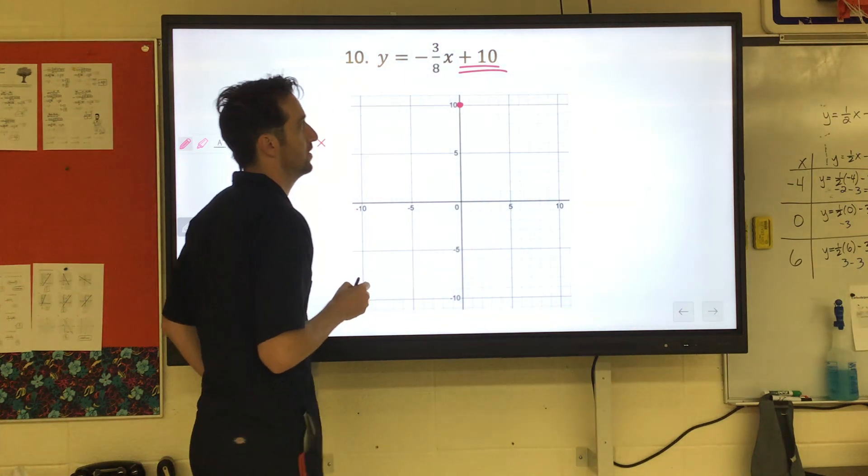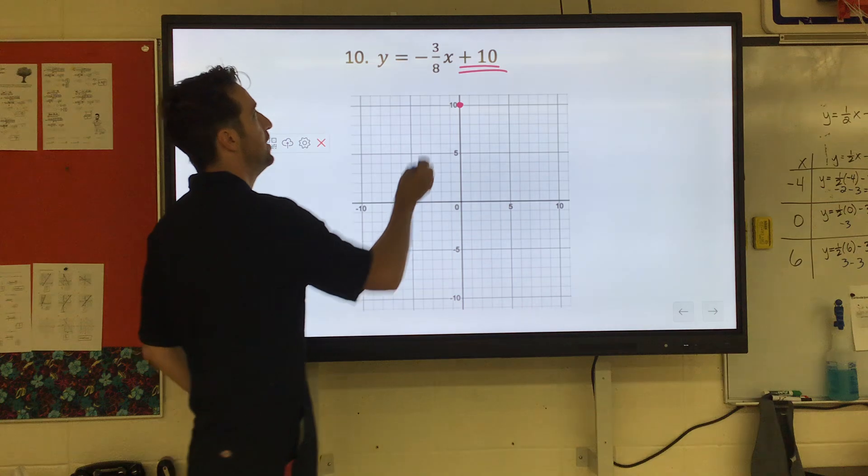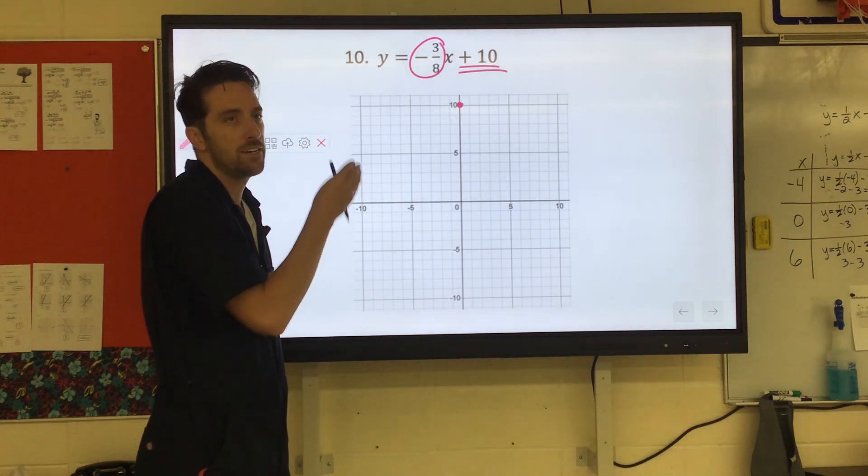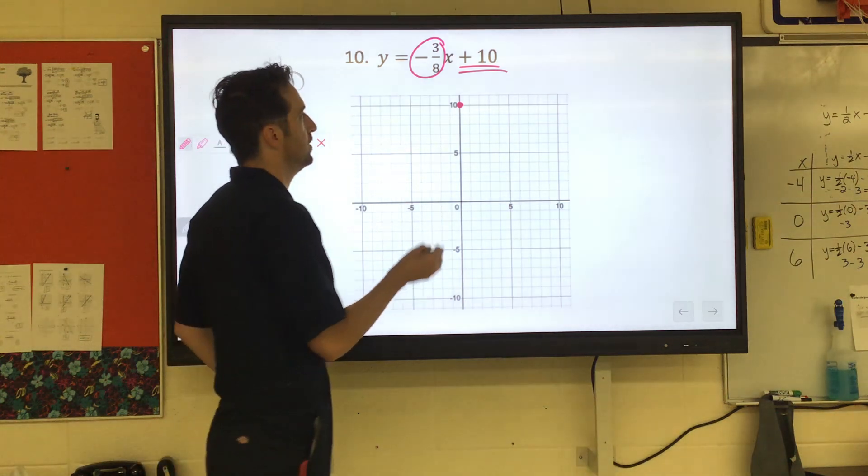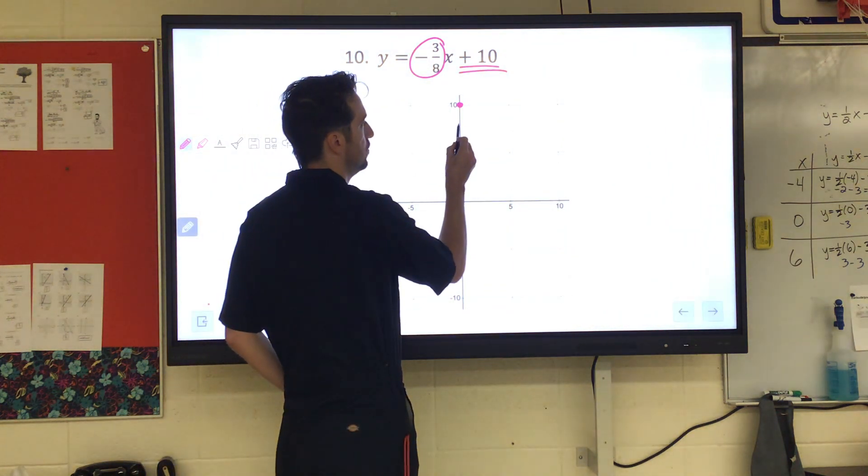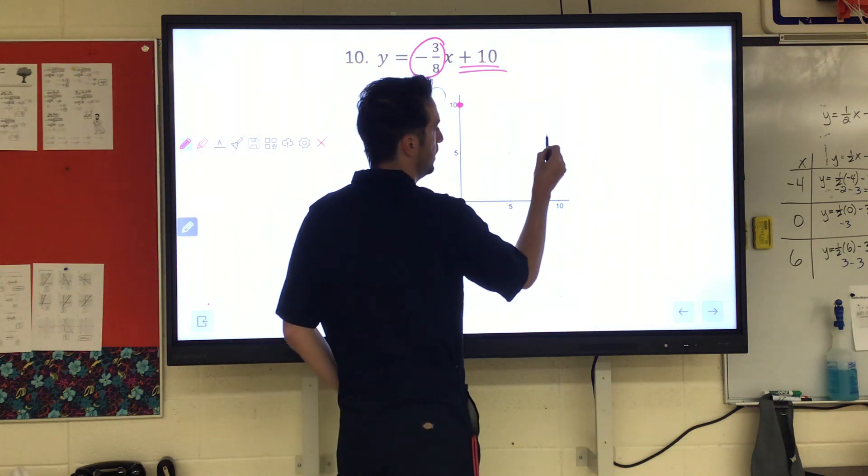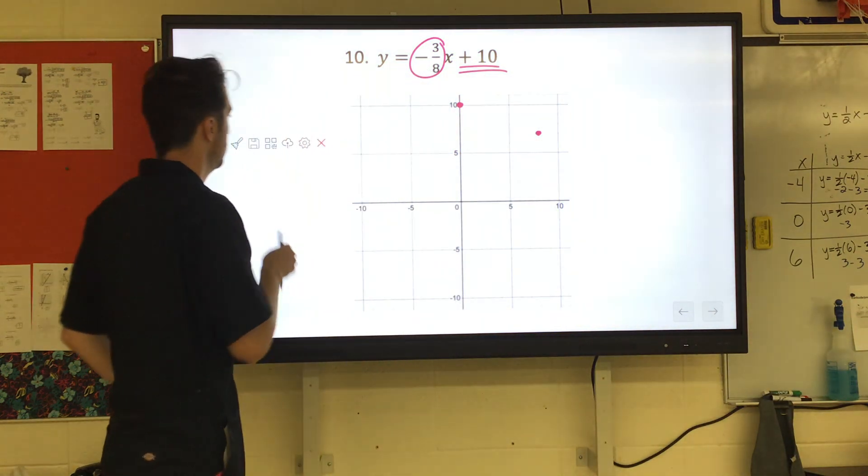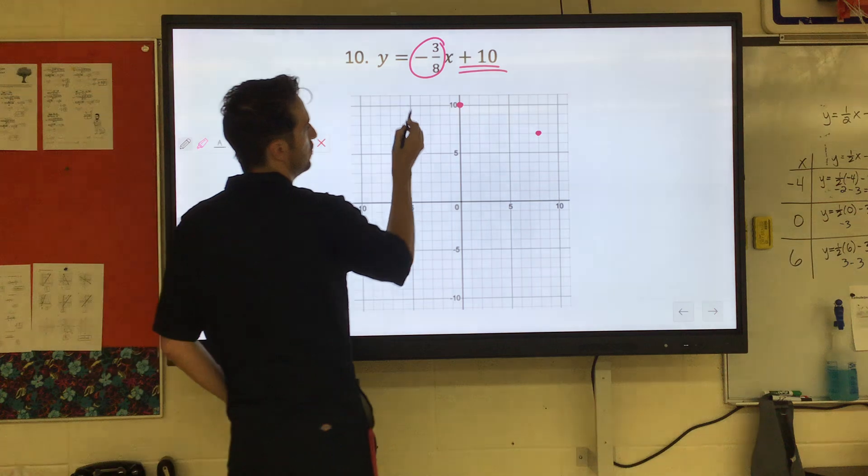There's our first dot. Then we use our slope, the negative three over eight, to find more points. If the slope's negative, we go down and right. So we're going to go down three, right eight. One, two, three, right eight. And then we can just draw a straight line through those two points.